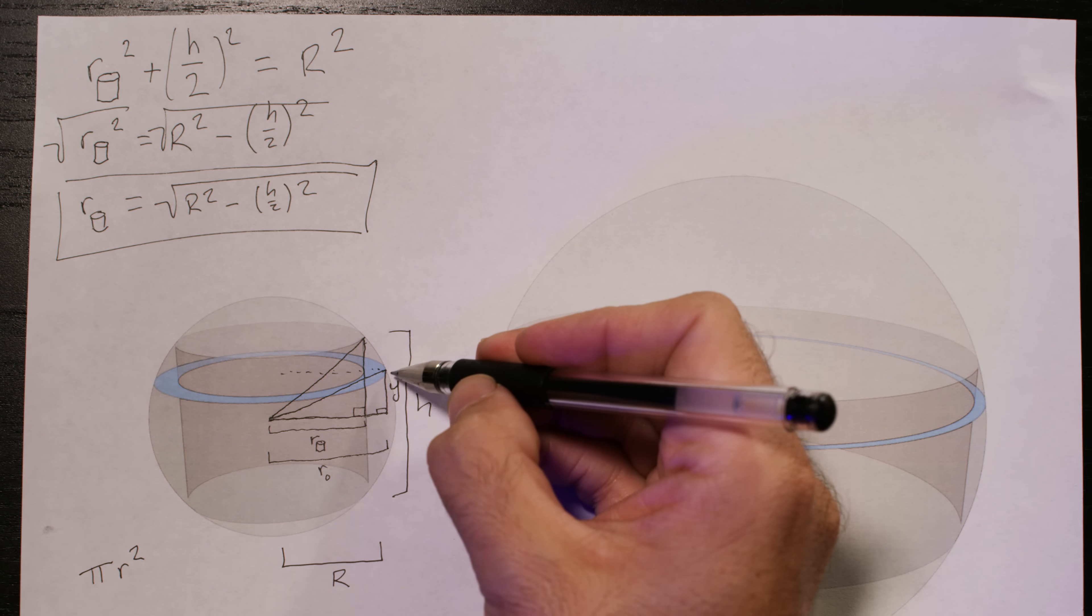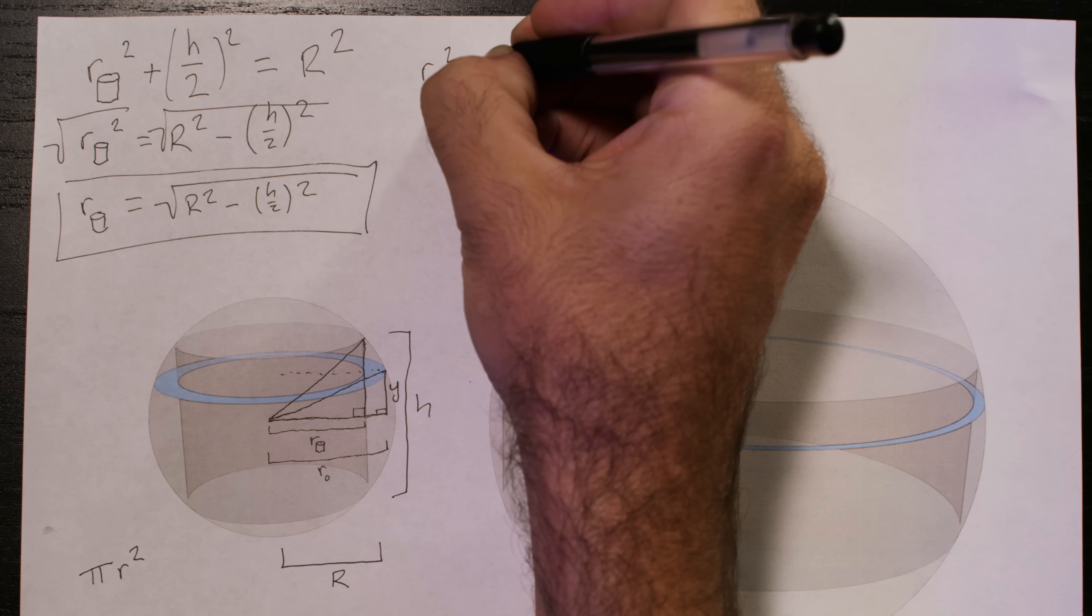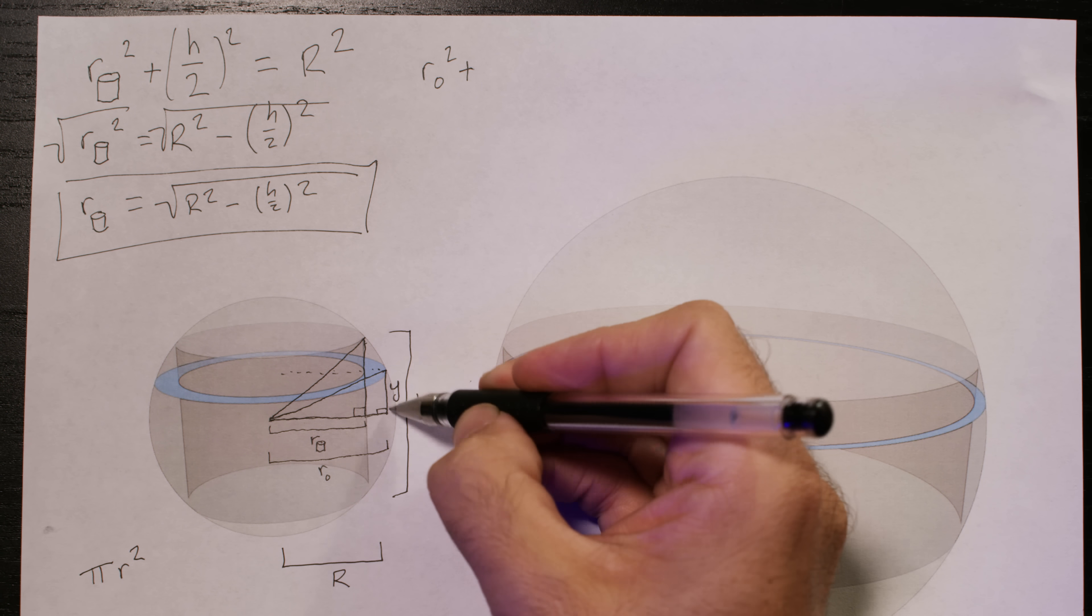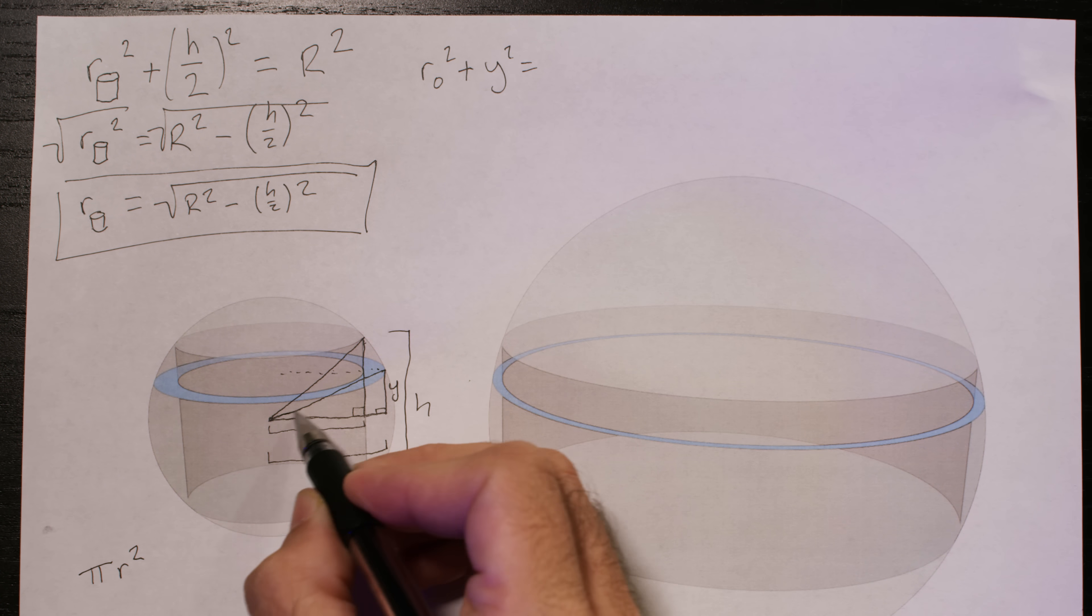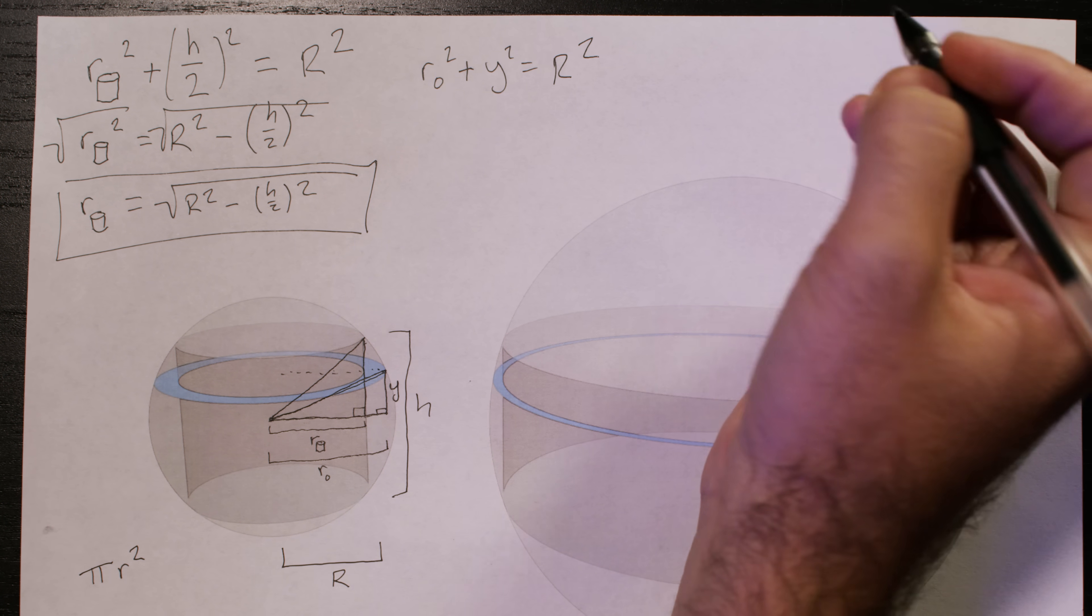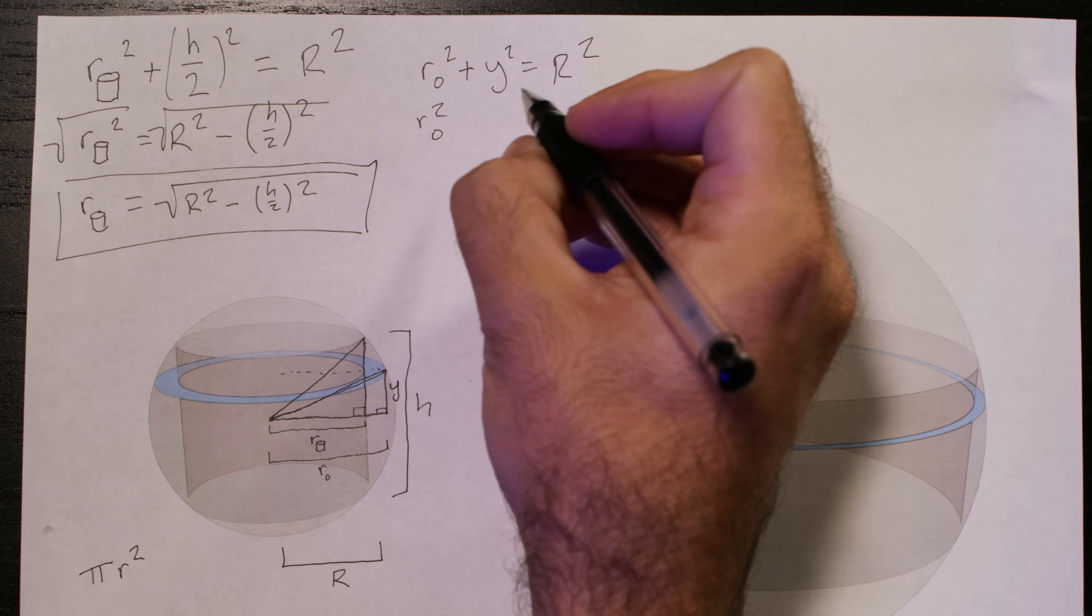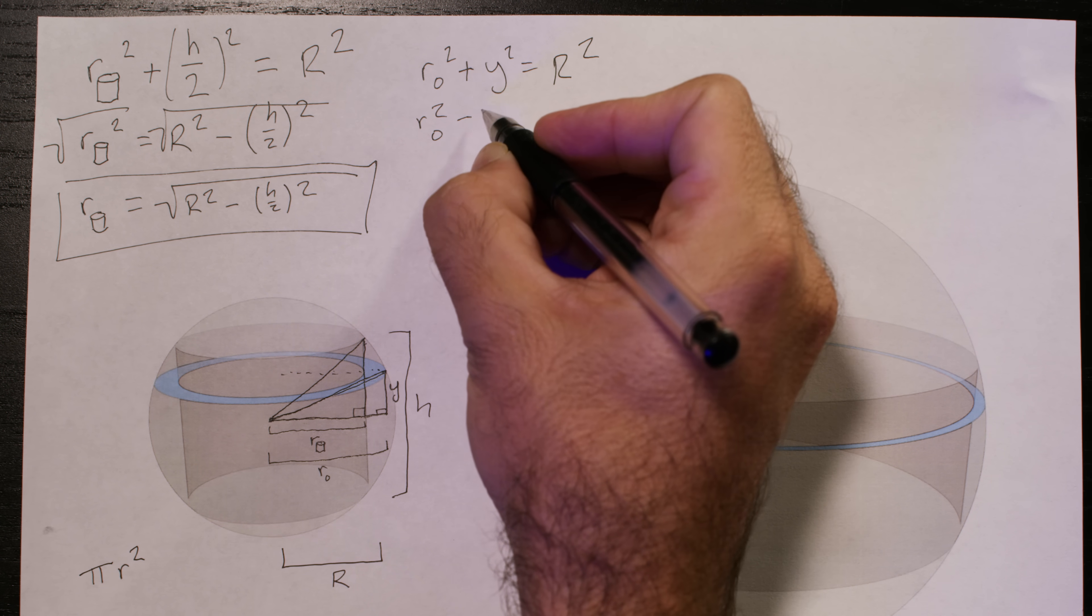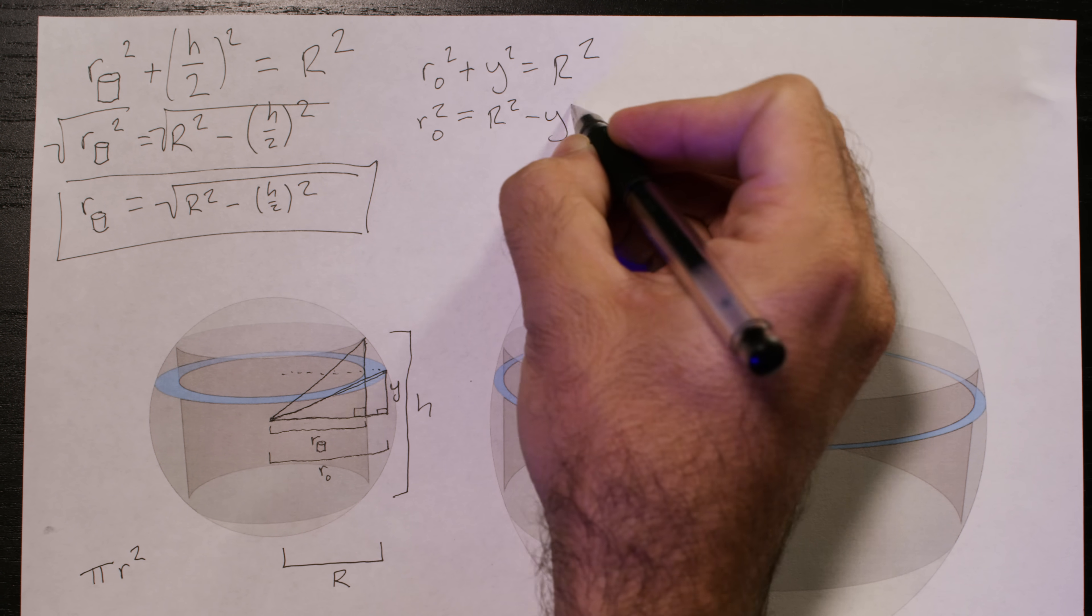Okay, so we know that the radius of the sphere's cross section squared plus this distance squared, which is Y, equals the hypotenuse squared. Well, what do you know? The hypotenuse is the radius of the sphere again, capital R. Okay, let's subtract Y squared from both sides. The radius of the sphere's cross section squared equals the radius of the sphere squared minus Y squared.